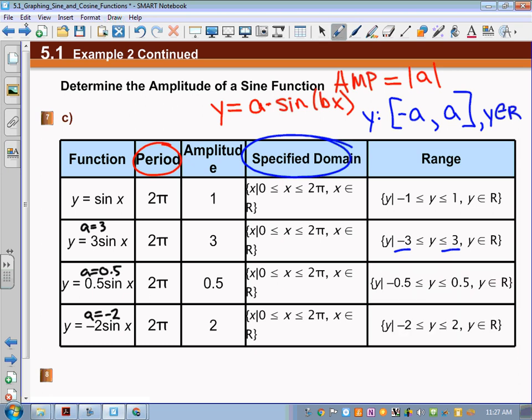Again, this is -a, positive a. Now, a little tricky on this bottom one. Technically, this is -a, but positive 2 is greater than negative 2, so we would write that as y is from -2 to 2.